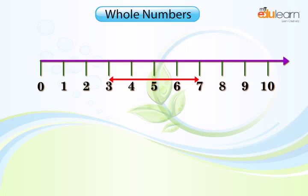As one unit between 3 and 4, another one unit between 4 and 5, then 5 and 6, and 6 and 7. On adding, we have 4 units.